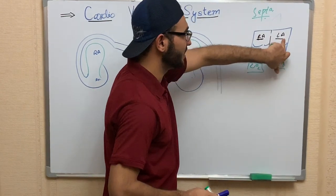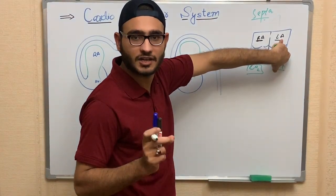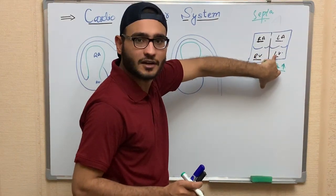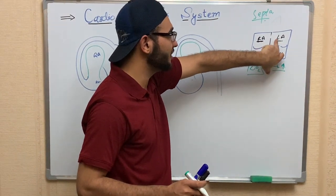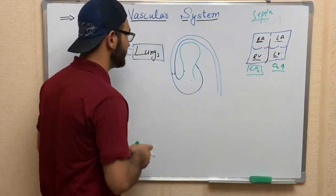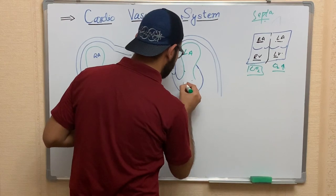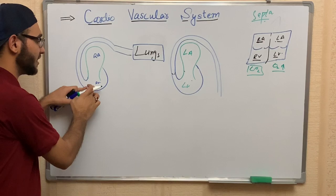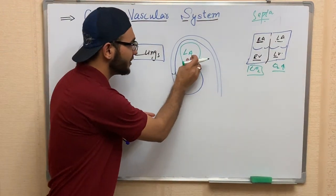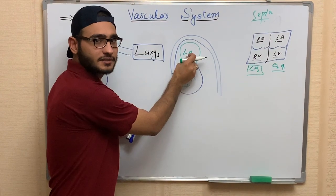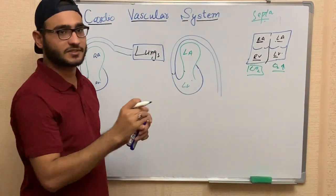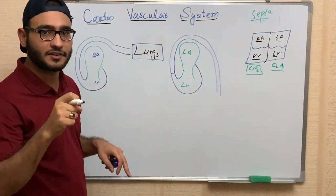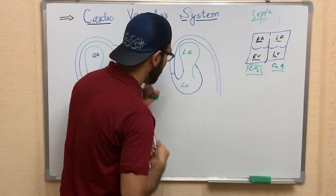The left atrium contains oxygenated blood, and from the left atrium blood will go to the left ventricle. Nearly about 90 percent of the blood will go to the left ventricle without pumping from the left atrium.